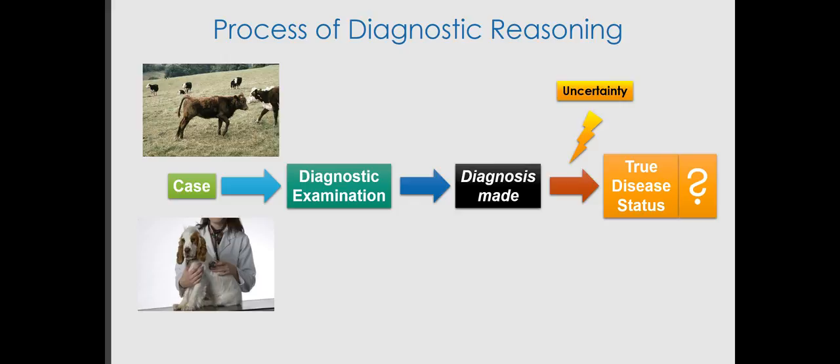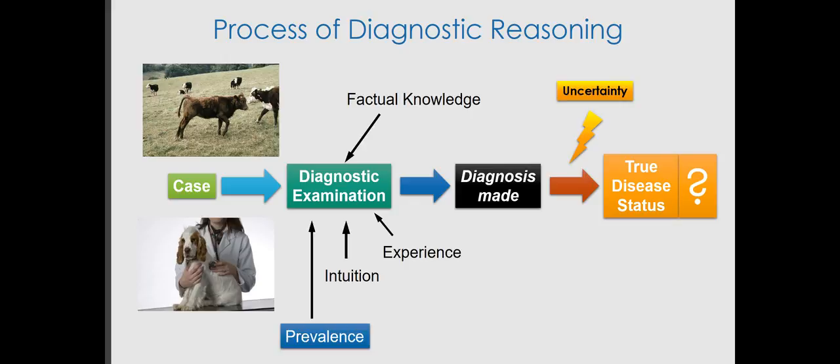That uncertainty in relation to whether the diagnosis is a true reflection of the disease status is affected by a number of factors. These include, of course, the factual knowledge that the veterinarian has about the diagnostic process. There is also an element of intuition, which doesn't necessarily have to be a bad thing. What is very important is the experience that a veterinarian has — somebody who has just graduated will have less of that, though they might have more up-to-date factual knowledge, whereas a veterinarian who has been working longer will have more experience. Then there is the prevalence of the disease being considered, and the role of prevalence is of critical importance.